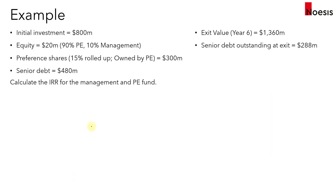Let's look at an example. In a particular LBO-based acquisition, there will be an initial investment of $800 million in total, funded by equity of $20 million — 90% from the PE fund ($18 million) and 10% from management ($2 million). There are preference shares with a 15% roll-up, payable only at exit, 100% owned by the PE fund, totaling $300 million. Senior debt is $480 million, which all adds up to $800 million.